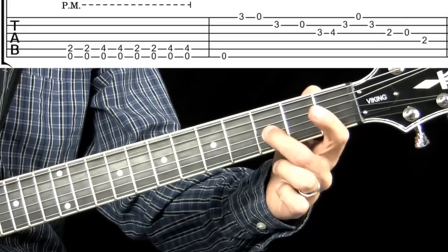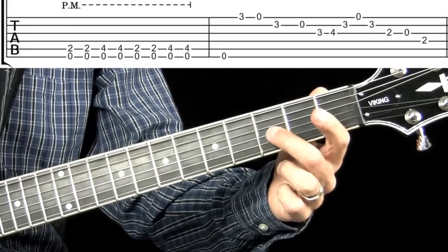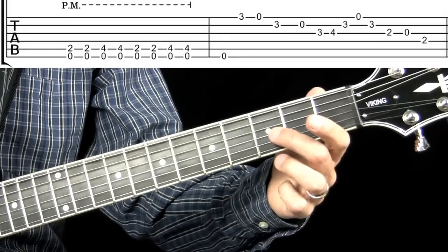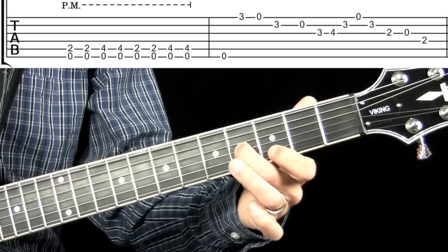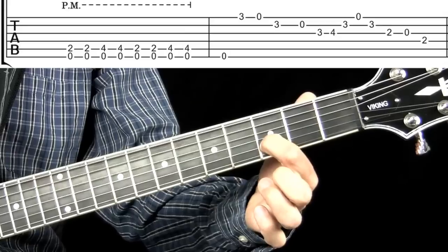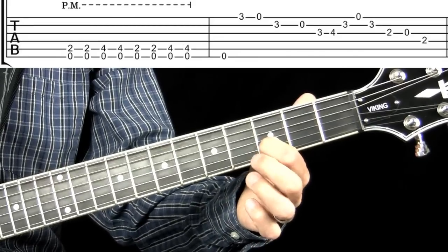And what I'm doing there is I'm starting with the middle finger on the third fret on the G string, sliding up, B string open, E string, back to B string.